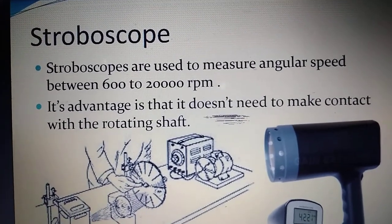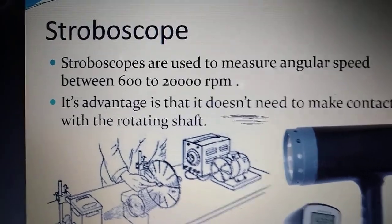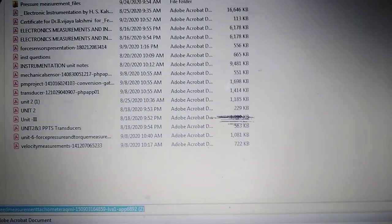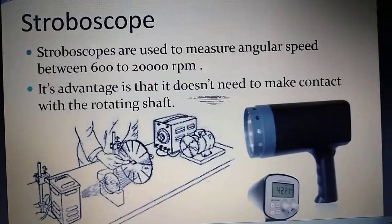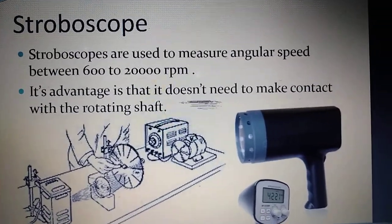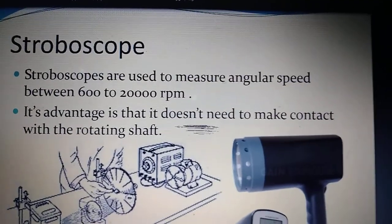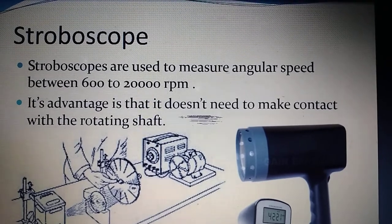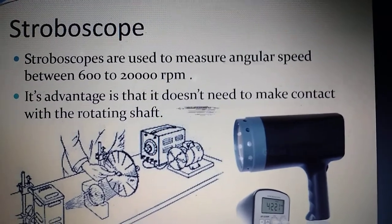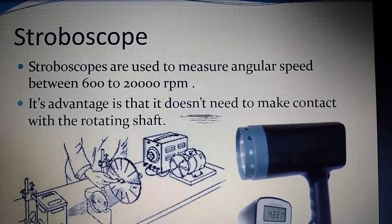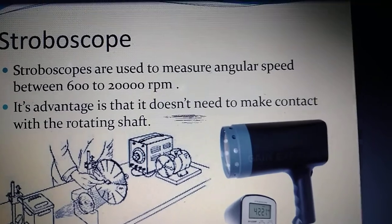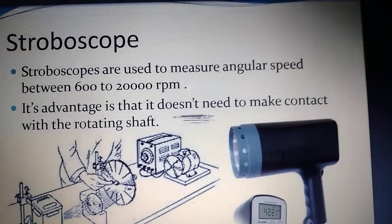The second important component is the speed of the input shaft — the shaft whose speed is to be measured. The third important component is the rotating shaft or disc. So these are the three important components in the stroboscope.